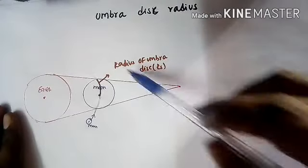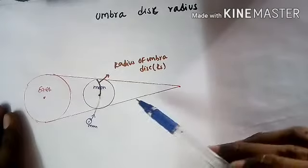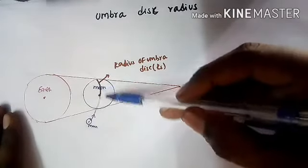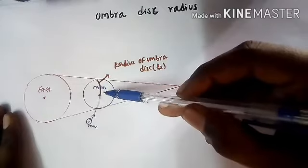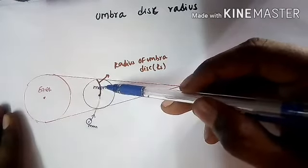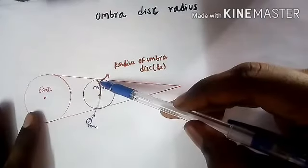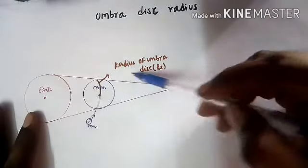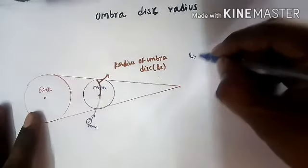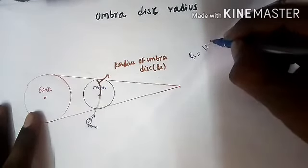Next is the umbra disk radius calculation. From the diagram, we will find the apparent radius of the Earth's umbra shadow and the moon, and calculate the ratio of these radii. The apparent radius of the Earth's umbra shadow, rs, is equal to 13.2 cm.